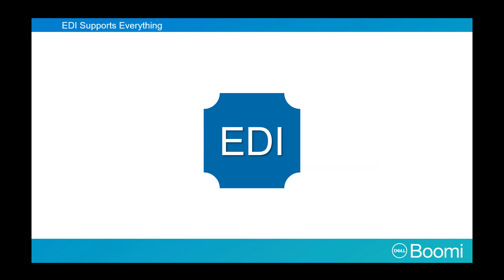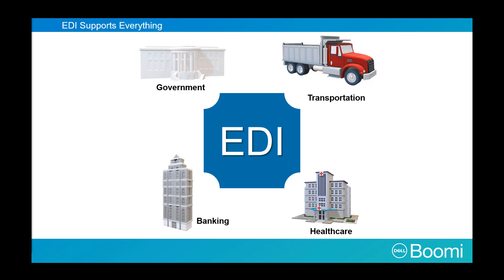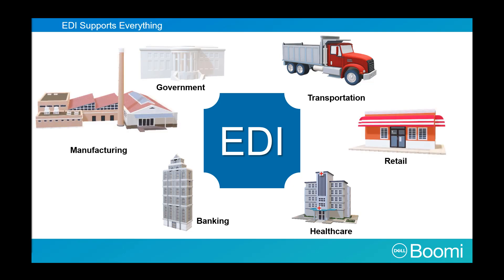Let's take a look at the business types EDI supports. In government, EDI exists in federal procurement. Transportation uses EDI to track motor carrier load tenders and request shipments. In healthcare, EDI is used to file medical claims for insurance companies and to adhere to HIPAA standards. It exists in banking for accepting payment information. Finally, EDI is heavily used in manufacturing and retail for handling invoices, purchase orders, and shipment notices.